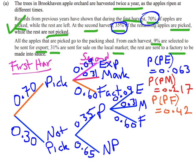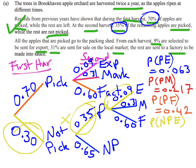Now we consider what happens if apples are not picked in the first harvest. The next combination is: not picked first harvest, picked at the second harvest, then sent for export. This is a three-stage process, so we multiply along three branches: 0.3 × 0.35 × 0.09 = 0.00945.